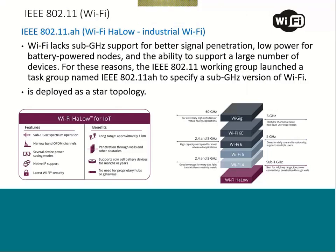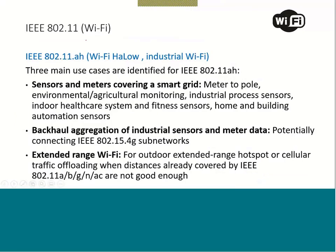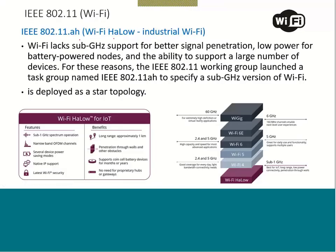The point where we left off is IEEE 802.11ah, which is basically called Wi-Fi HaLow — also referred to as industrial Wi-Fi. This is very important: traditional Wi-Fi — meaning standards A, B, G, N, or AC — lacks sub-gigahertz support.